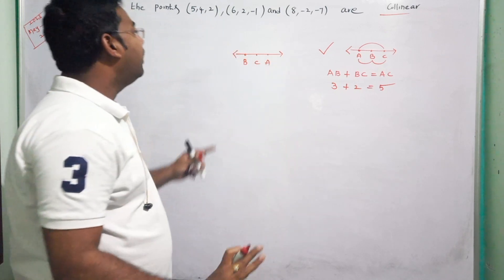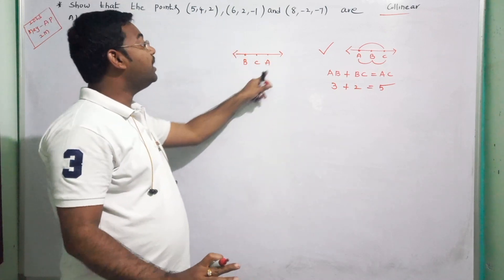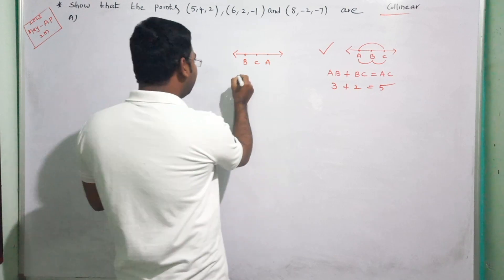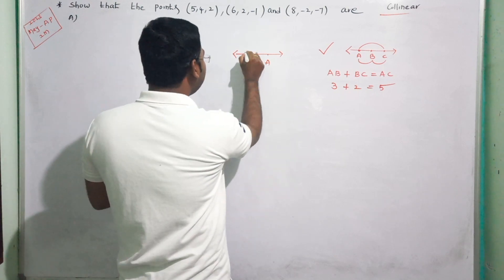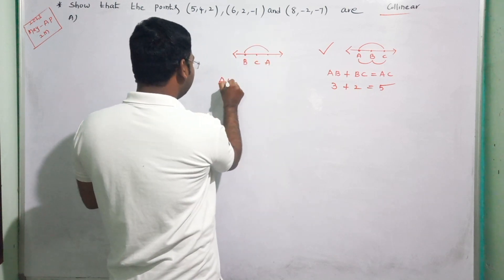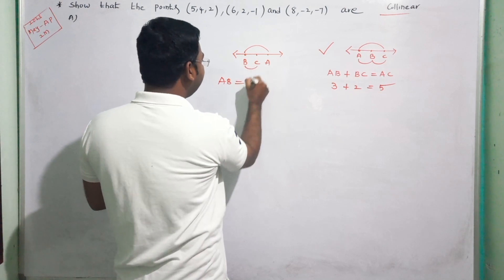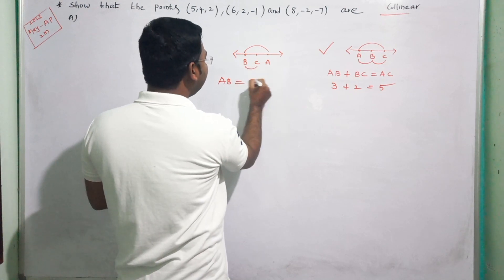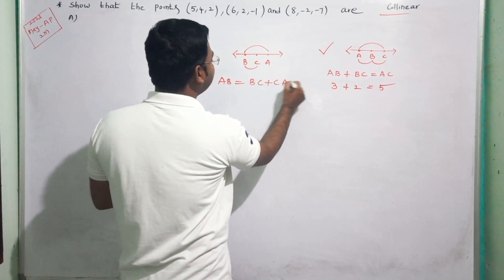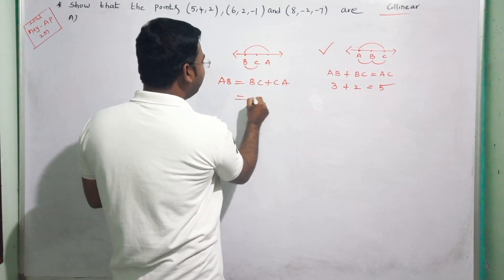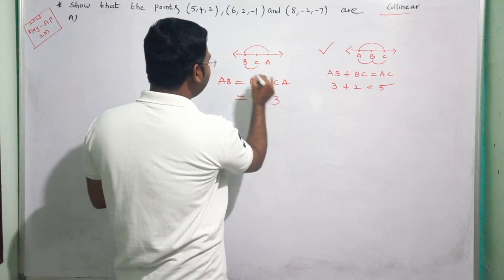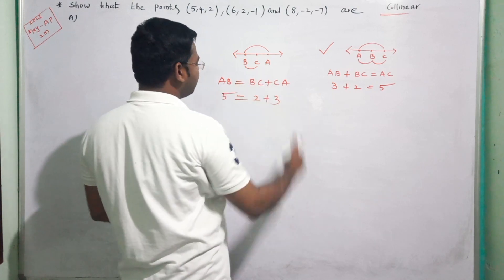I want to say that the distance condition is: AB plus BC equals AC. That is, the sum of two smaller distances equals the largest distance. So BC plus AB equals CA, giving us 5.